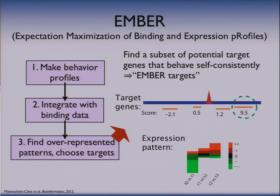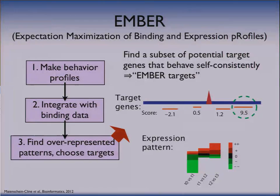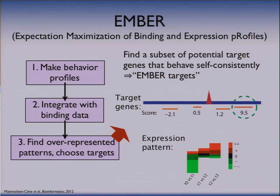This is the step where all the real interesting computational work happens, but I'm going to skip the details and talk about results. The basic idea is I'm going to search among the various potential targets, look at the gene expression profiles for each of these genes, and try to come up with a set of these genes — a fairly large set — that has a very self-consistent set of expression profiles. Once I've done that, I'll have a model for how the target genes behave and a model for how the background, non-target genes behave. And I can score each gene according to which model it fits best. So for each binding site I have its nearby genes, I have a score for each gene, and I take the gene with a high score based on some threshold — that's my target gene. I'll call these the EMBER targets.